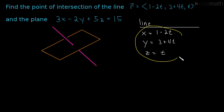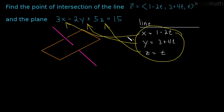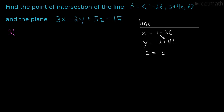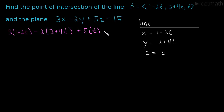So what that means is: we take the parametric point on the line and plug it into the plane equation to check if it equals 15. In for x goes 1 minus 2t, then minus 2 times y which is 3 plus 4t, plus 5 times z which is t. We want this to equal 15.